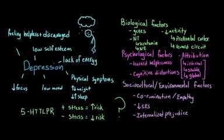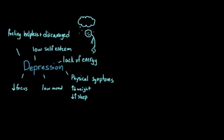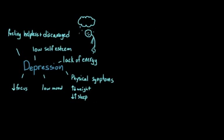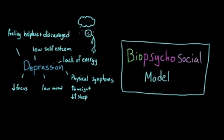So stepping back for a second, we said that we had biological factors, psychological factors, and sociocultural and environmental factors. When we put all of these things together, we get what is referred to as a biopsychosocial model of depression. This theory acknowledges that all of these factors play a role. So some people are genetically predisposed to the condition, but it only comes about if the situation is right, or if we develop certain patterns of thinking.